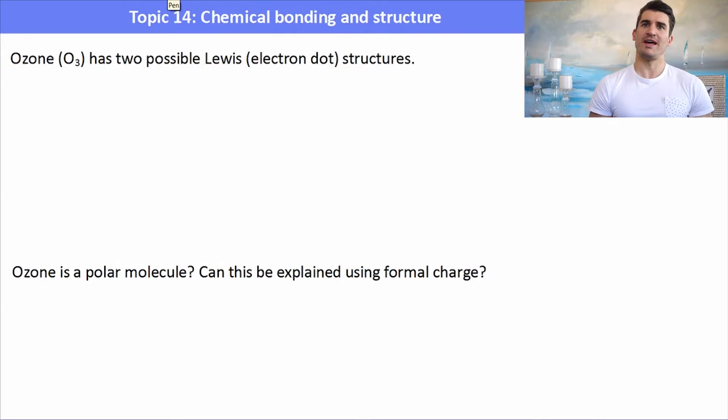Now ozone has two possible Lewis or electron dot structures and you don't need to remember them. You can simply work them out by using this little trick. Work out the number of electrons in the molecule. In this case we have 6 times 3 which is 18. Divide it by 2 which means we have 9 electron pairs. Then we need to connect up our three oxygen molecules with an oxygen in the middle and then a bond to the other two oxygens.